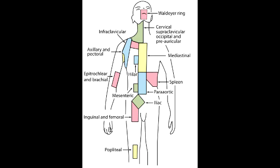What is the primary lymph node drainage site for the lateral side of the dorsum of the foot? The lateral side of the dorsum of the foot drains into the popliteal lymph nodes.